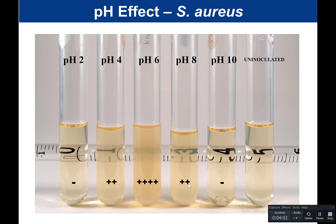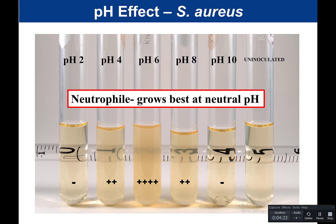Staph aureus grew best at pH 6, but it ranged from pH 4 to pH 8. It grew best around a neutral pH, so we call this type of bacteria a neutrophile — it grows best at neutral pH. Most bacteria are neutrophiles, which makes sense because in our experiments using pH indicators, almost every time the pH starts at neutral. Phenol red starts out orange, bromocrystal purple starts out orange, and the OF test starts out green, because most bacteria are neutrophiles that grow best at neutral pH.